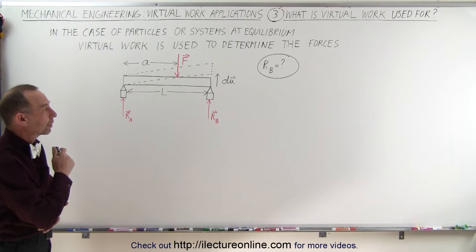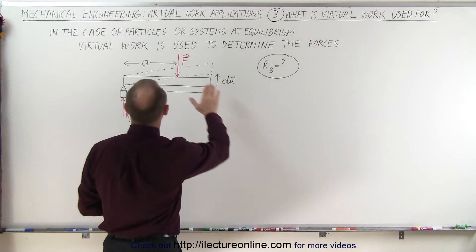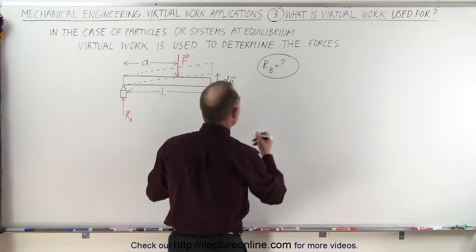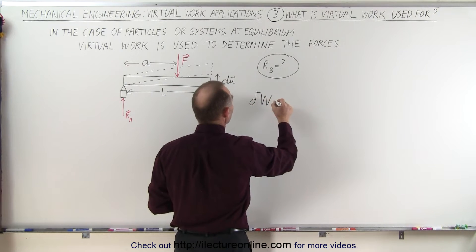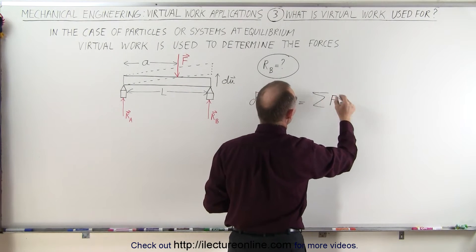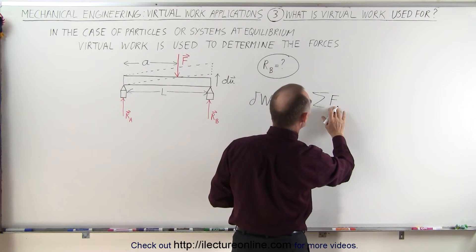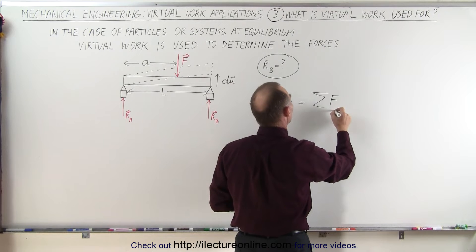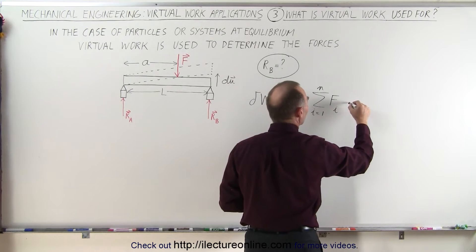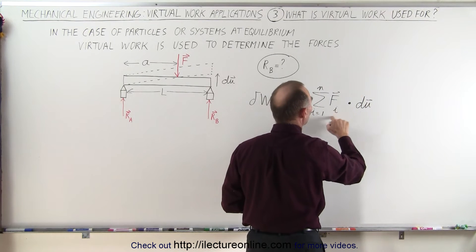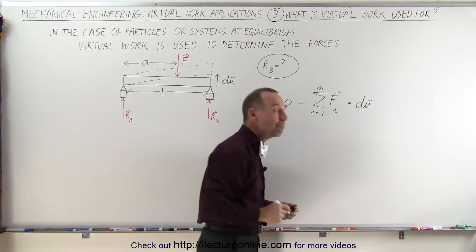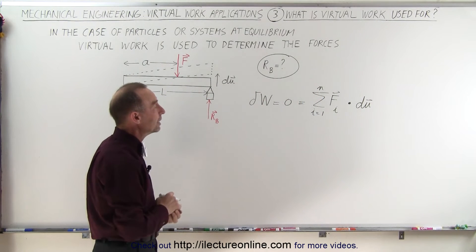So how do we do it using virtual work? Well, we start with the definition that if particles or systems are at equilibrium, that means there is no net force acting on it. That means that the virtual work done is going to be equal to zero. And we can define it as being equal to the sum of all the forces acting on the system, the forces sub i, from i equals 1 to n. And we're going to dot those forces with du. So we're going to have a dot product between each of the forces acting on the system and then multiplying that times the small imaginary displacement du. And we know that's going to be equal to zero.